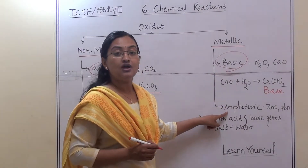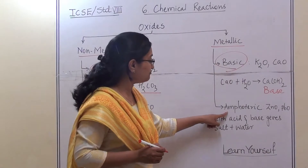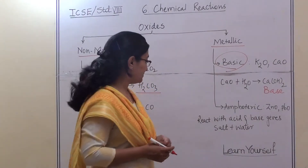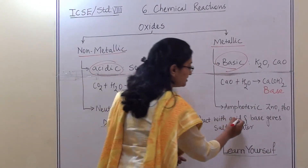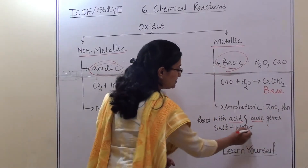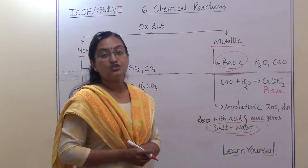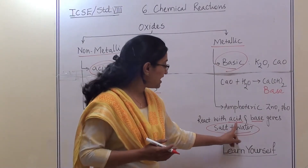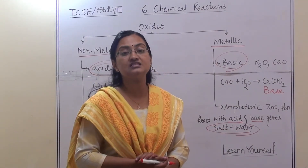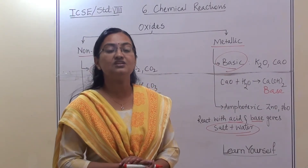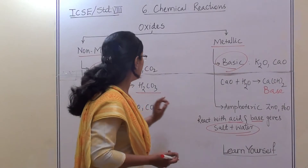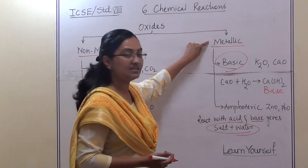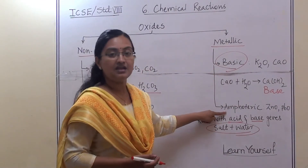Metallic oxides are also amphoteric. What is the meaning of amphoteric? For example, zinc oxide and lead oxide — their nature is amphoteric. Amphoteric means when they react with both acid and base, they give us salt plus water. So an amphoteric oxide is one that reacts with both acid and base to give salt and water. In summary, non-metallic oxides have two types — acidic and neutral — and metallic oxides have two types — basic and amphoteric.